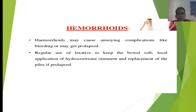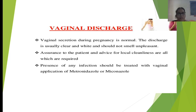Hemorrhoids may cause complications like bleeding or prolapse. Management includes regular use of laxatives to keep the bowel soft, local application of hydrocortisone ointment, replacement of prolapsed piles, and a high-fiber diet to reduce hemorrhoids.